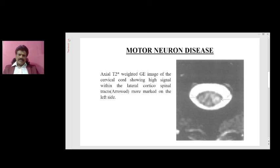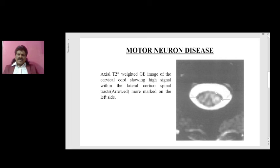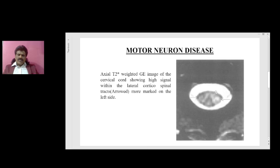Here you can see a motor neuron disease neuroimaging: an axial T2-weighted image of the spinal cord showing high signal intensity within the lateral corticospinal tracts, arrowed, more marked on the left side. This is showing altered signal — high signal intensity — affecting the corticospinal tract. If it affects only the anterior horn cells of the spinal cord, both the anterior horn cells, there will be a signal intensity change in the anterior horn cells classically compared to the owl's eyes. When both anterior horn cells get affected due to altered signaling, it resembles an owl's eye — known as the owl's eye sign. So it can affect either upper motor neurons or lower motor neurons or both together, when we call it ALS.